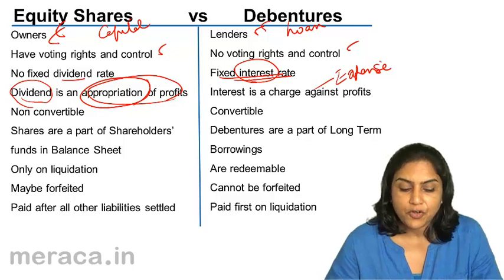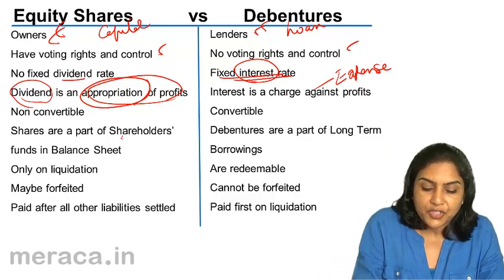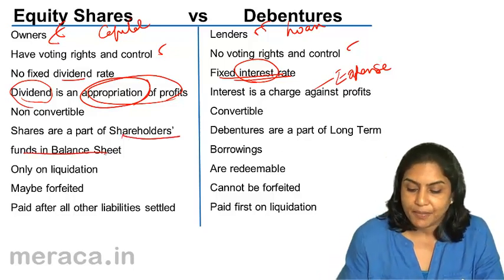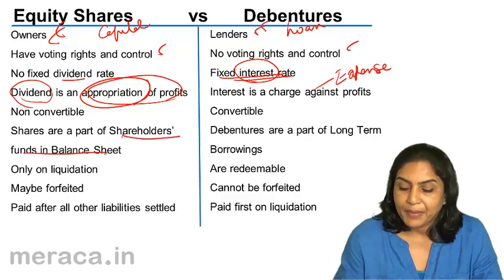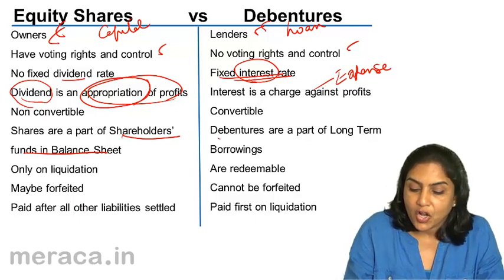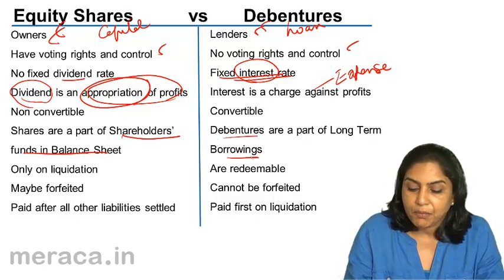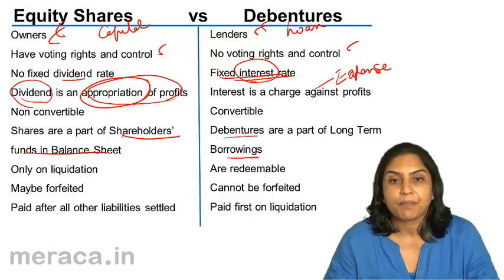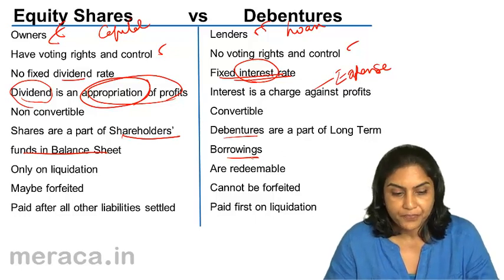Equity shares are a part of the shareholders' or owner's funds in the balance sheet. But debentures come under long-term borrowing.